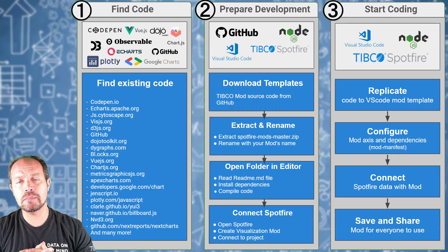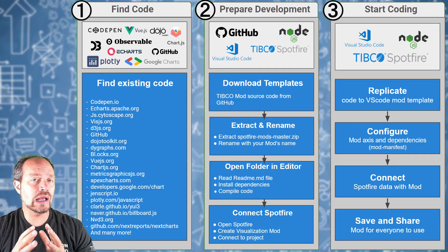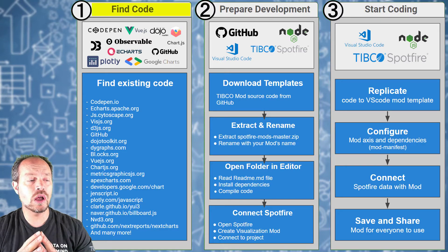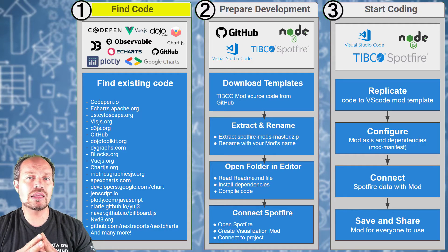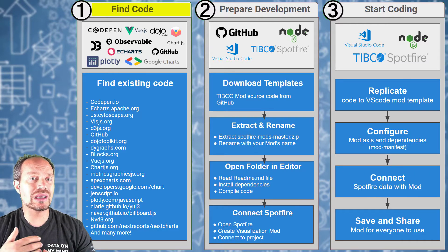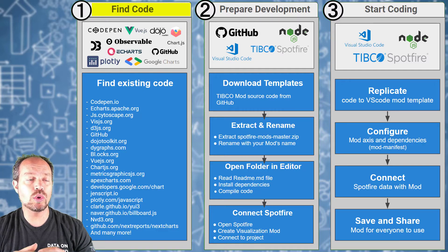The first step is to find code. You can either have something in mind that you want to create — for example, I already knew that I wanted a difference chart — or you can browse existing code from many different JavaScript libraries. I have CodePen, EHRs, and many others that we are going to be looking at, just to give you a feel on how to perform searches.